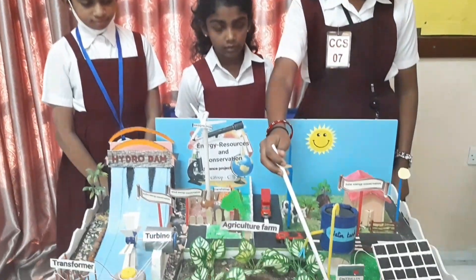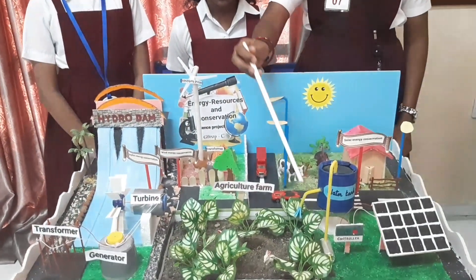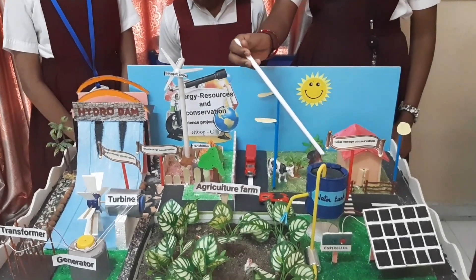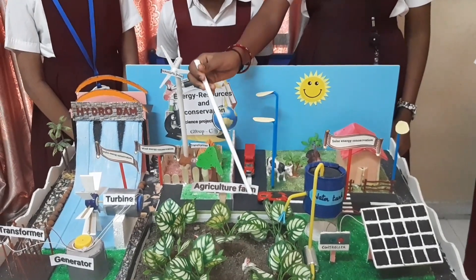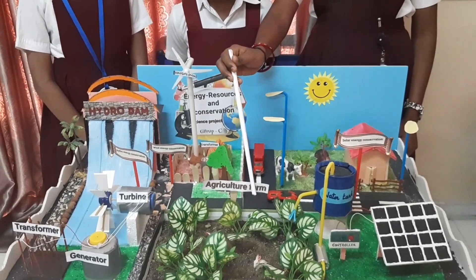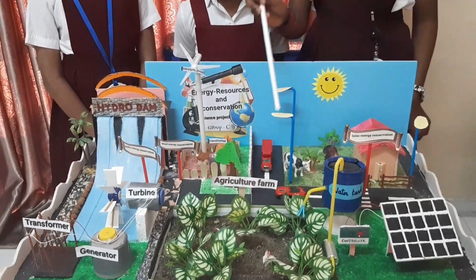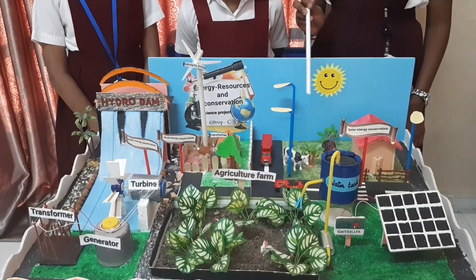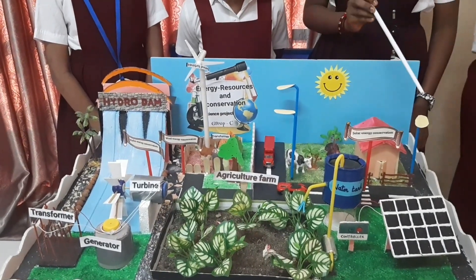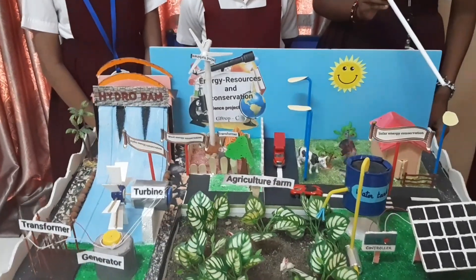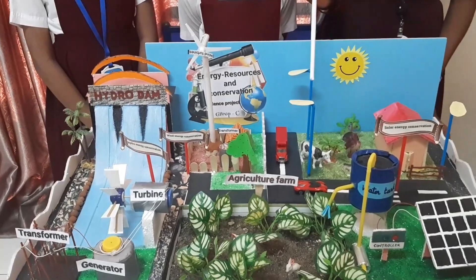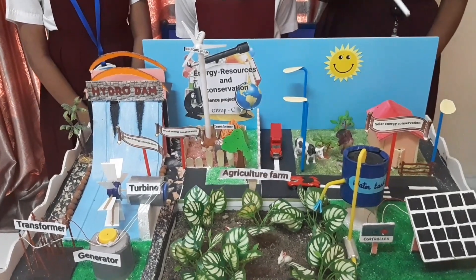Firstly, this energy is used to pump underground water and the water is stored in water tanks. From there, crops are irrigated. The second use is for running street lights. The electricity is stored in batteries and used at night.